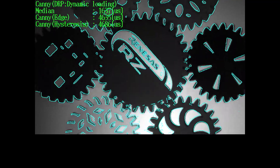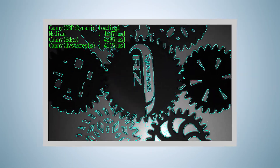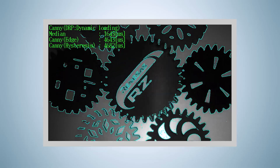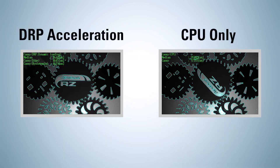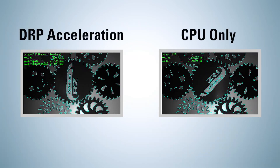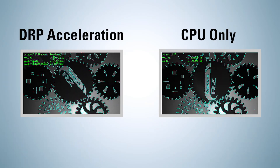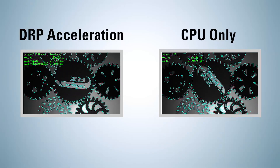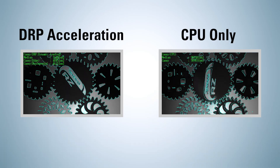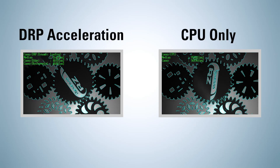In the video display, the edges track the moving objects smoothly and accurately. How does this compare to a system without DRP acceleration? Let's turn off the DRP and instead have the ARM Cortex-A9 processor execute the three algorithms in sequential code. Now we see something quite different. There is a significant lag between image capture and edge detection, especially apparent when looking at the RZ logo. Also, the video frame rate has dropped considerably and there is visible jitter. The reported CPU execution time for the processing, implemented here as a sequence of two discrete algorithms, is approximately 158 milliseconds.